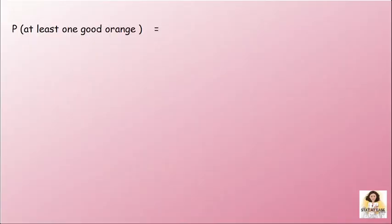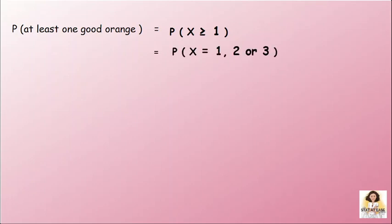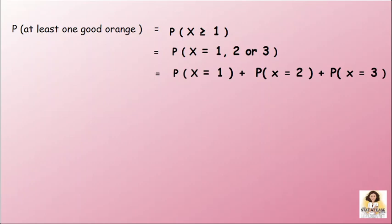Second part: probability of at least 1 good orange. At least 1 means P(X) greater than or equal to 1. That covers X equal to 1, 2, and 3 — that is, 1 good orange, 2 good oranges, 3 good oranges. Adding individual probabilities gives 3 terms of the binomial. This is a lengthy process.